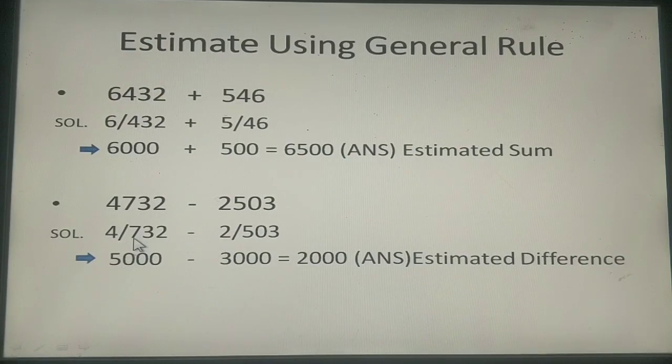And thinking for this number. This is definitely greater than 5. So children what? Yes. Now you are going to add 1 to this number 4. So 4 plus 1 will give you 5. And hence the estimated number is 5000.